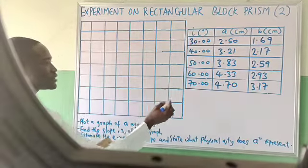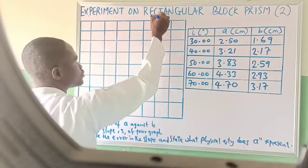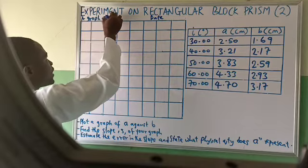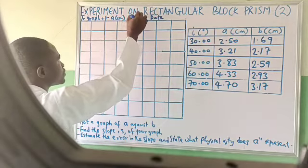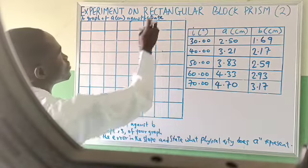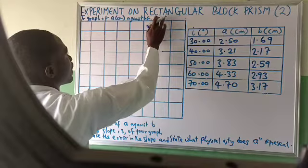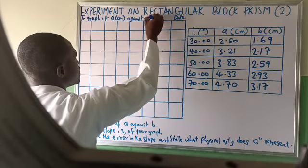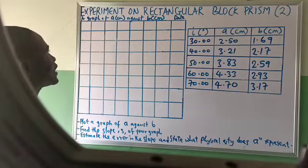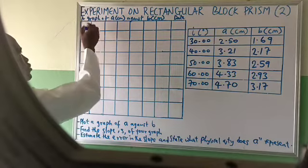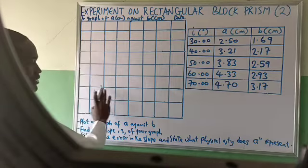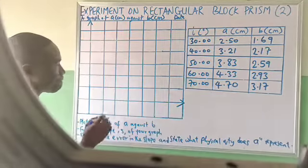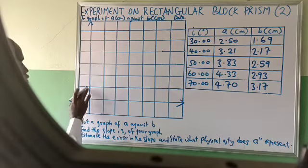Before you do the graph plotting, please note that here you have to put your date, then write: 'a graph of A in cm against B in cm.' After you put your date, write the graph title — 'graph of A in cm against B in cm' — very important. Then the next thing is to locate your axes. I will just put my axes here, skipping one line in case I need room to write.